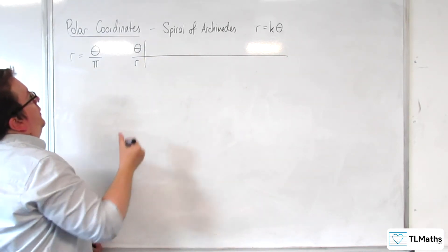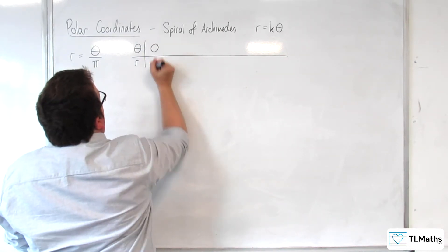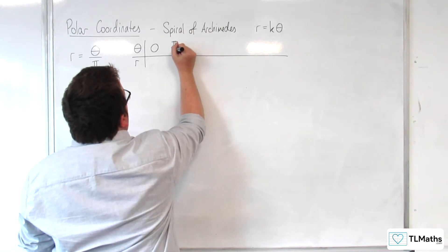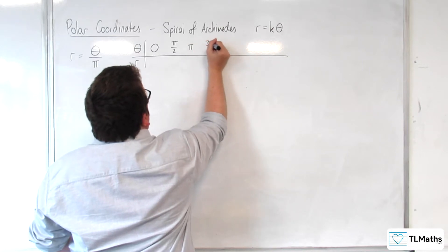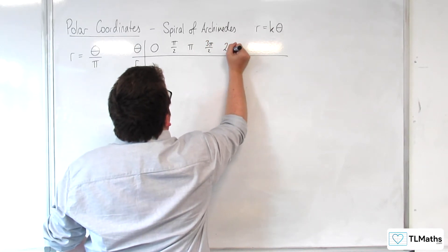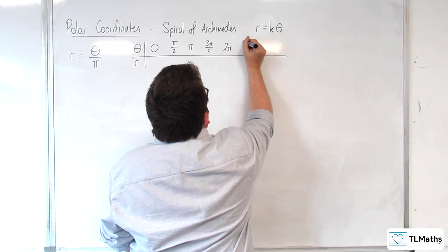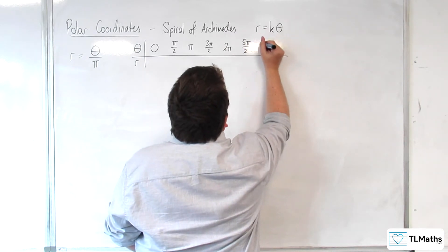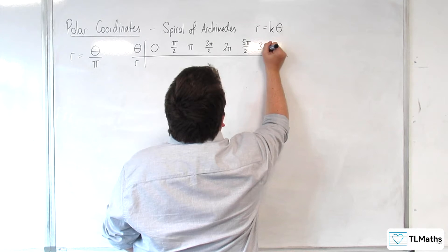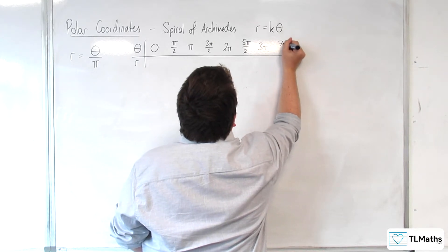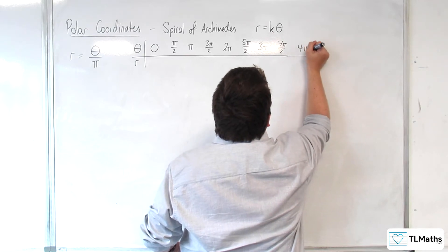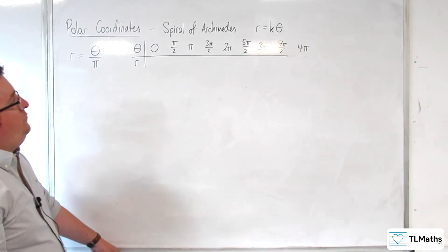So, let's start off with 0. And we're going to go up in pi over 2s. So, pi over 2, pi, 3 pi over 2, 2 pi. Then we're going to have 5 pi over 2. Then we're going to have 3 pi. Then 7 pi over 2. And then 4 pi. OK, let's leave it there.